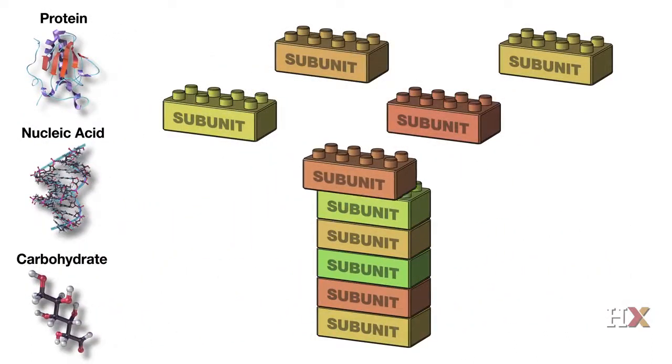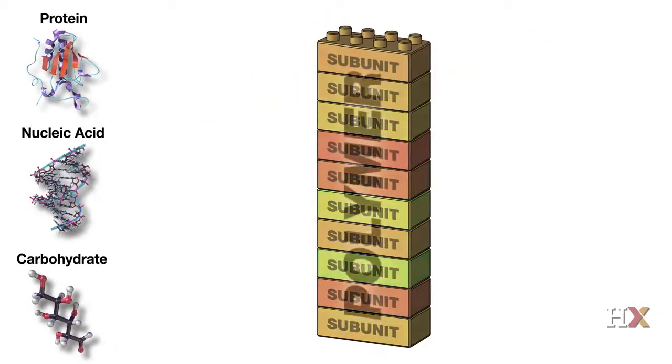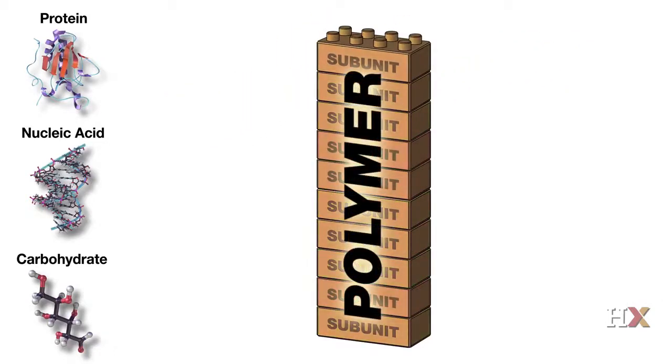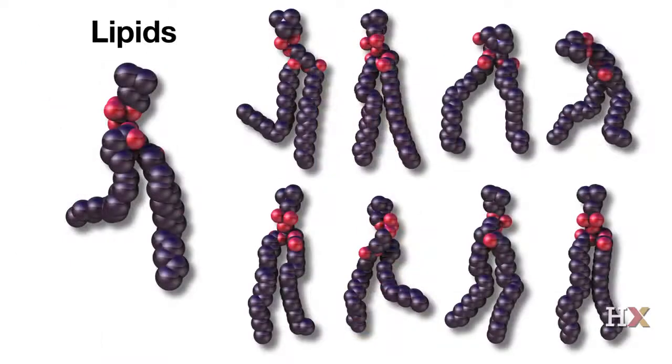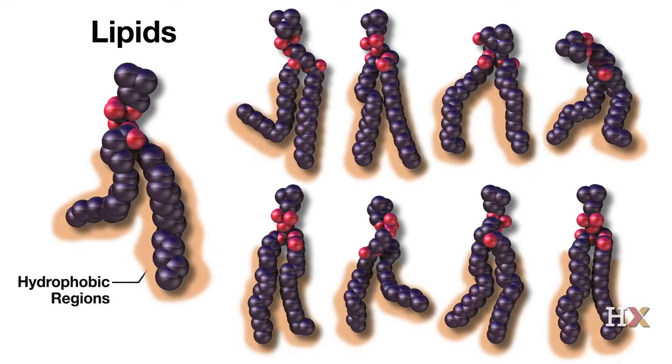So if you consider proteins, nucleic acids, and carbohydrates, they are all long polymers made of smaller repeating units with a defined structure. Lipids are different. This class of molecule is not defined by its chemical structure, but by the fact that these molecules share the same property. They are extremely hydrophobic.